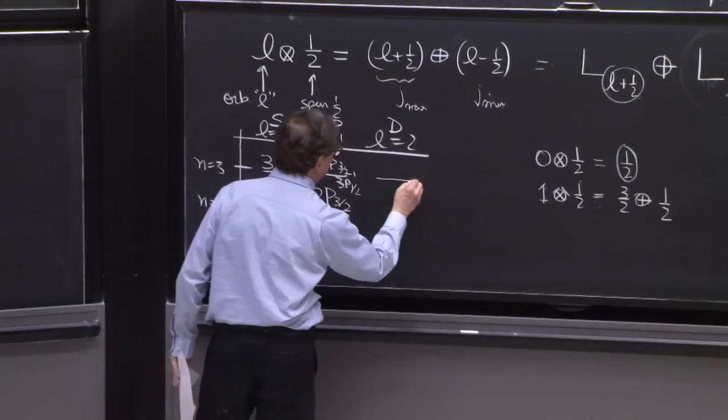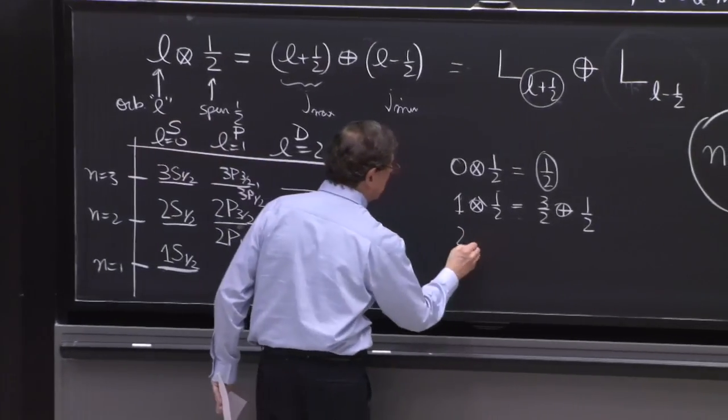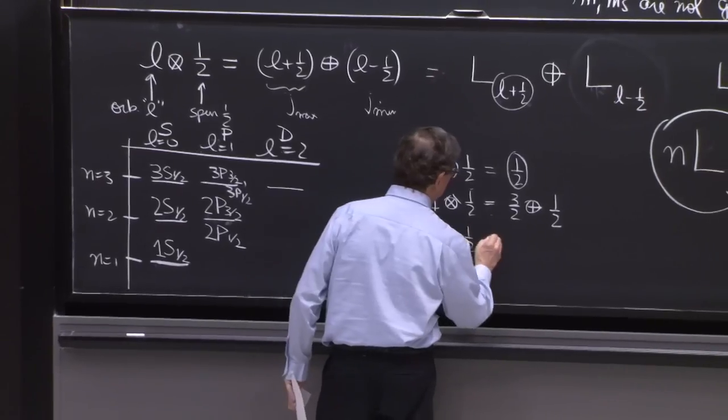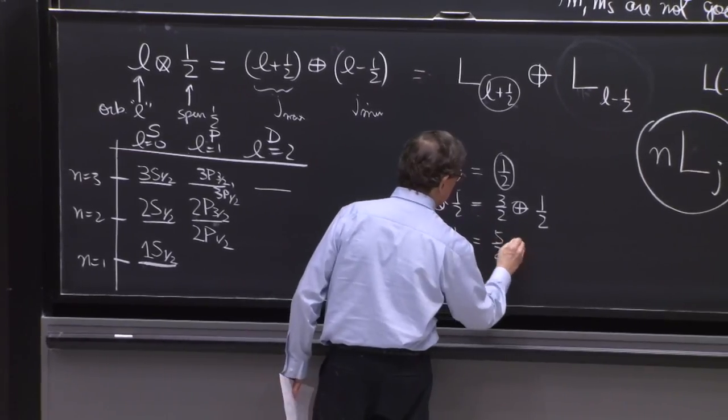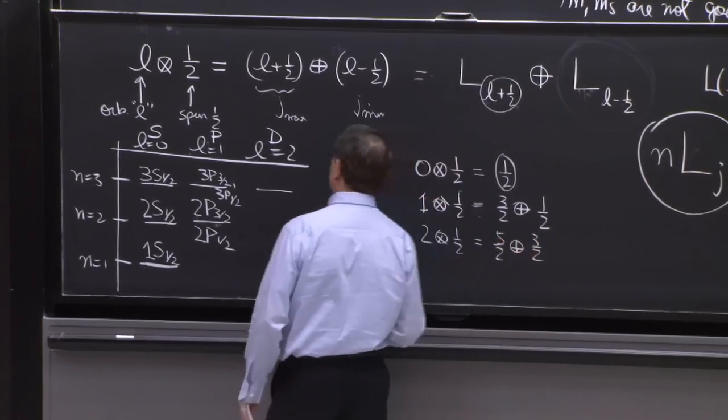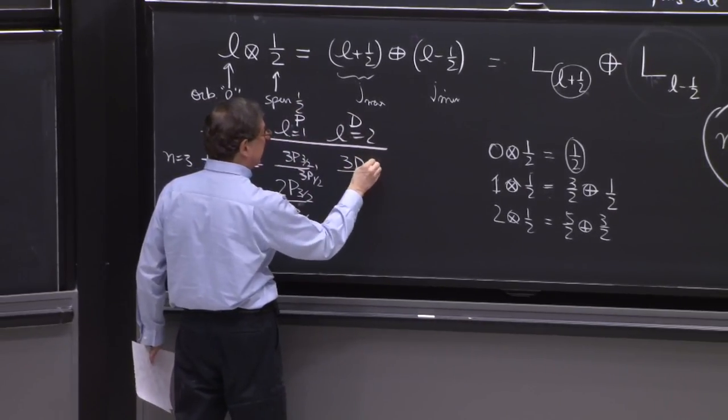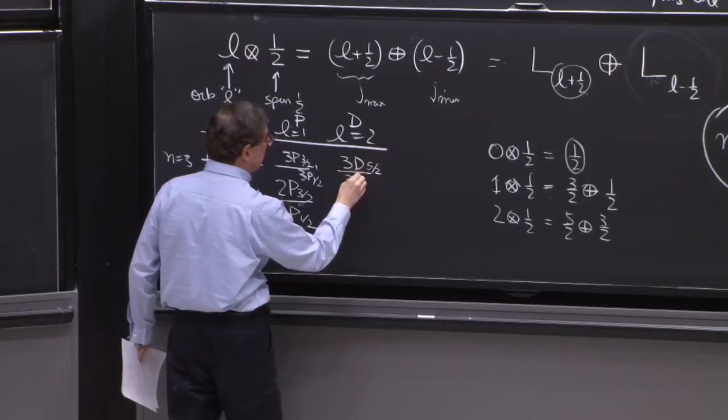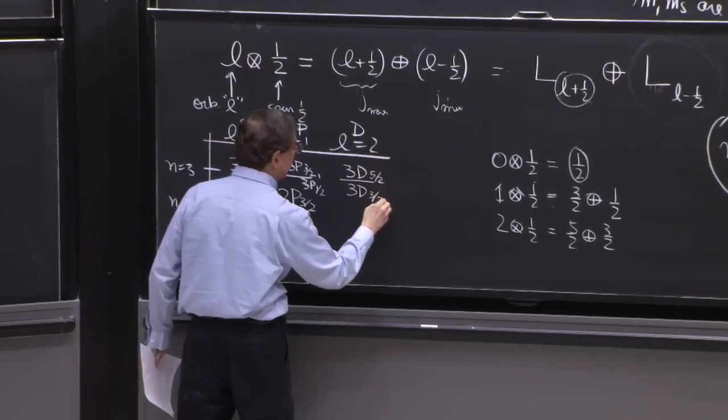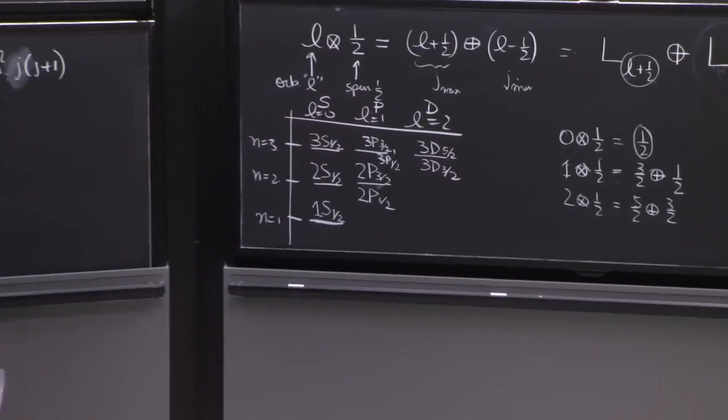Finally here, l equals 2. You have 2, tensor 1 half is 5 halves plus 3 halves. So you would have 3 d, 5 halves, and 3 d, 3 halves. Those are your states.